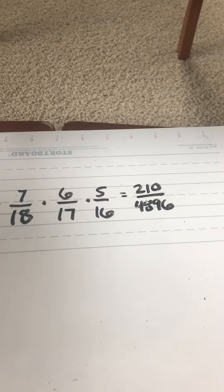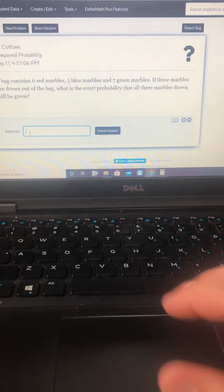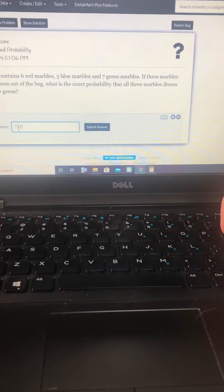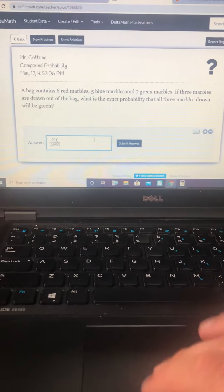So, it's asked for the exact probability. Now, that can be reduced, but I might be able to get away with not having to reduce it to 210 over 4,896. Let's see how it works.